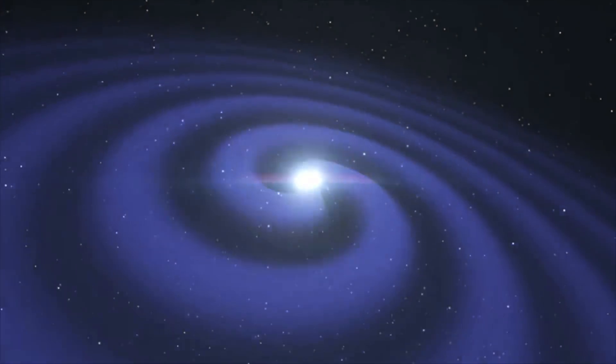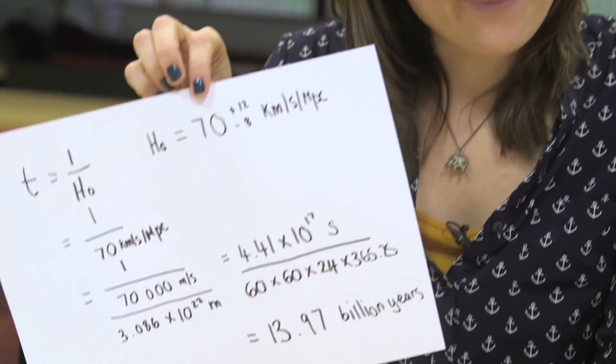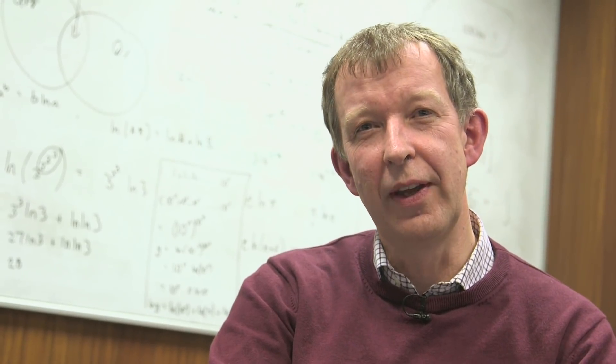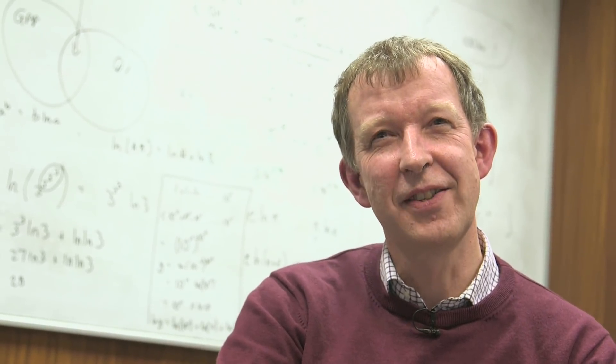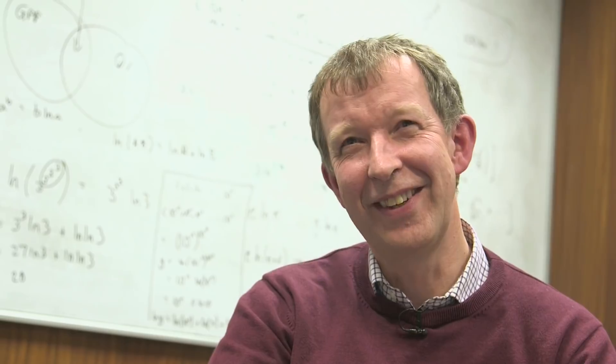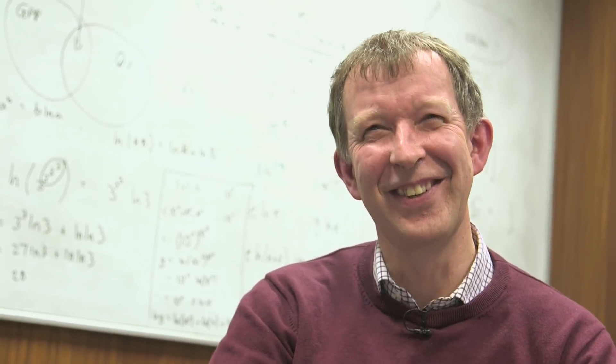Using the LIGO detection date of 17th August 2017 and the numbers from the paper, we calculated that the Big Bang happened on a Tuesday — or possibly a Monday. What day of the week would you create the universe? March the 6th — that's my birthday, so it's pretty clear that's when it was.